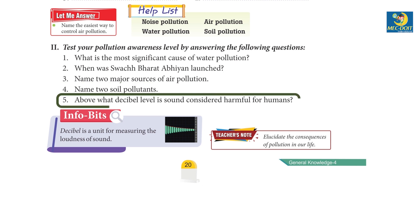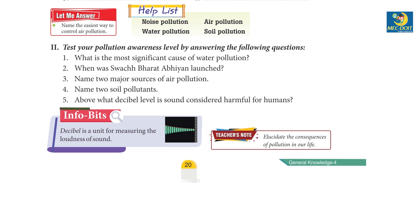5. Above what decibel level is sound considered harmful for humans? 70 dB to 120 dB. Infobits: Decibel is a unit for measuring the loudness of sound.